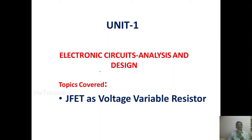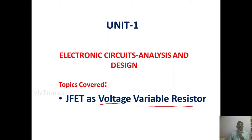In the last class we have seen about different JFET amplifier configurations like common source, common gate, and common drain amplifier, and also we have seen the analysis of those things like voltage gain, input impedance, and output impedance. In this class we are going to discuss about how the JFET can work like a voltage variable resistor. When we change the input voltage, the resistor value is getting changed — that is the meaning of voltage variable resistor. By applying some voltage, the value of the resistance will be varied.